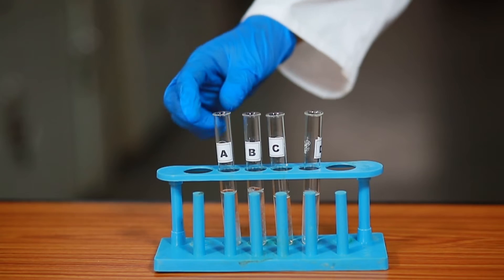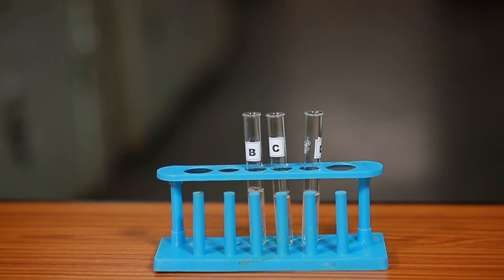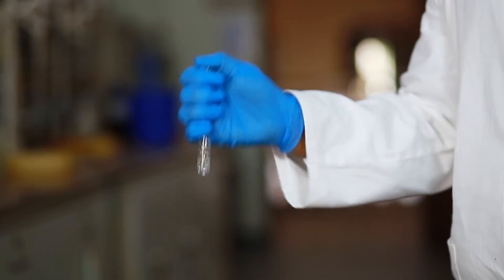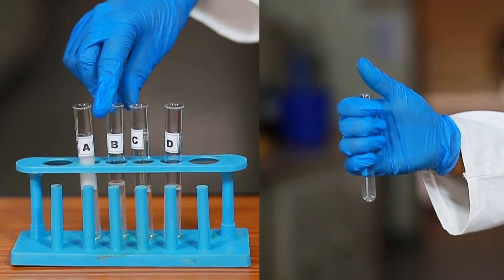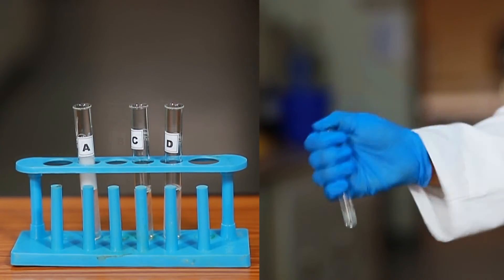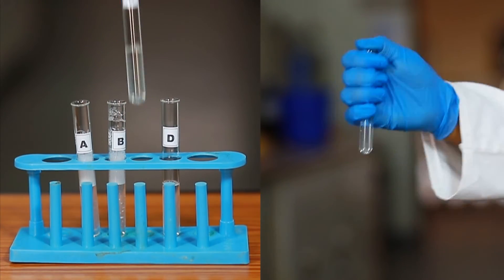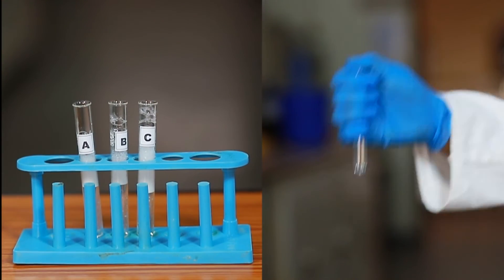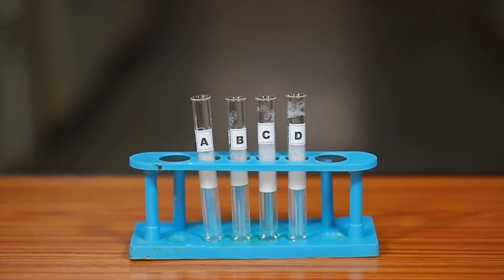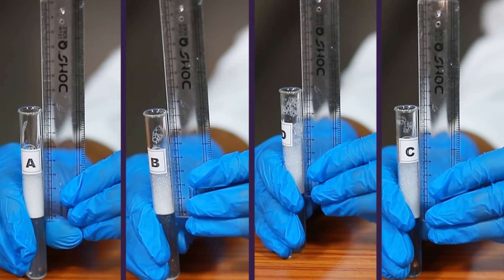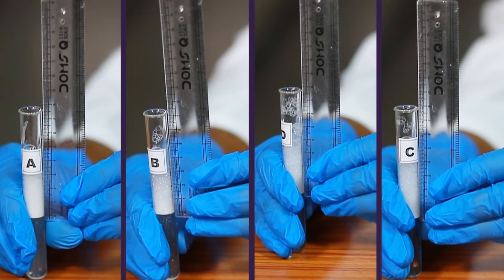Take the test tube labeled test tube A and shake it 10 times by placing the thumb on its mouth. Repeat the steps with the remaining three samples of soap solutions. By shaking the test tube, foam will form. Using a measuring scale, measure the length of the foam produced.